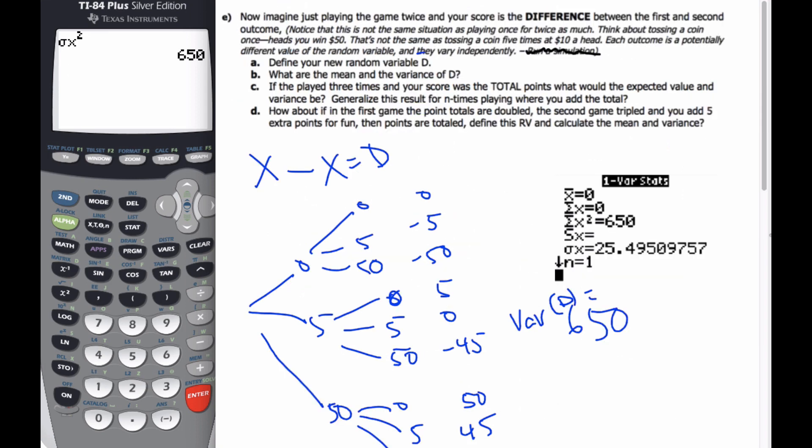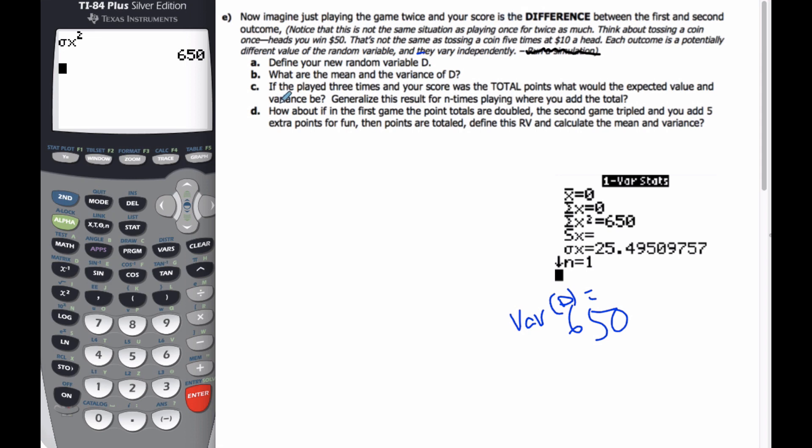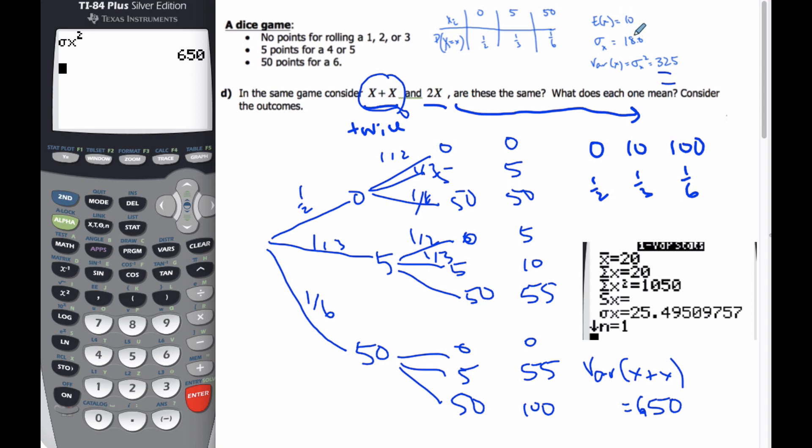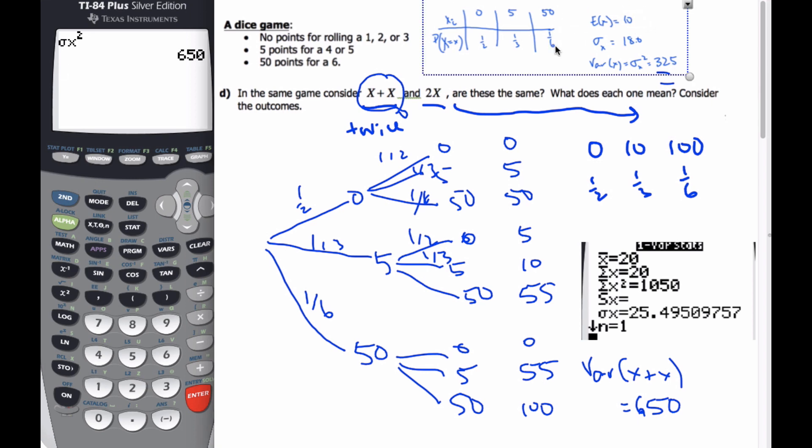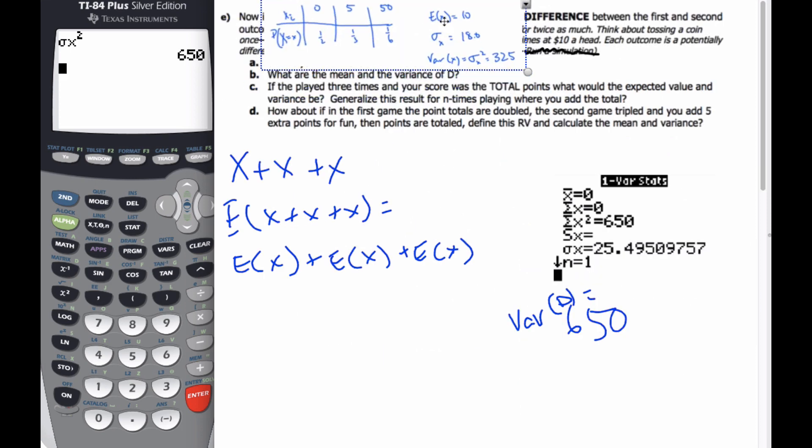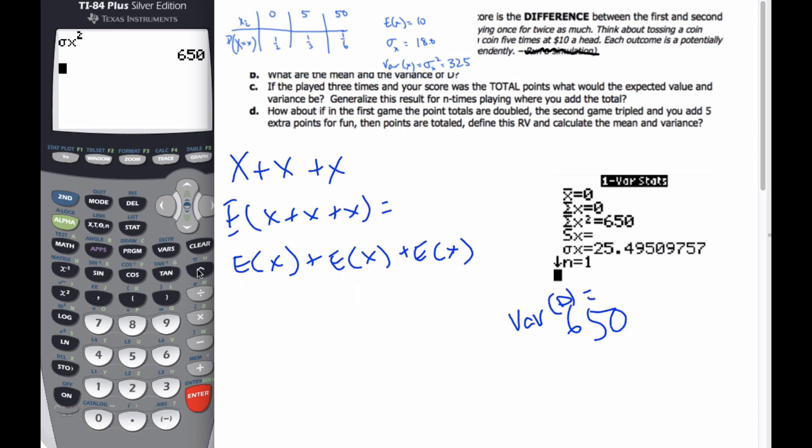So if I look at C part, I'm going to clear off this part here. If I look at C part, if I played three times and my score was a total points, what would I expect the variance to be? Well, that's now saying if I play three times, so that's X plus X plus X, three games. Well, based upon that, I would think the expected value of X plus X plus X will be the expected value of each of them individually. If I remember back from the original game, the expected value was 10. And I'll take this little table here along with me to the next page. And so then it's going to be equal to 10 plus 10 plus 10, which is going to be 30, which makes sense to me.